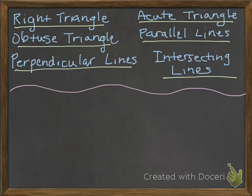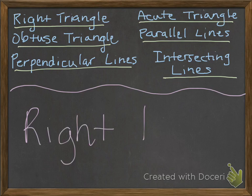First definition: a triangle with one 90-degree angle. If you said right triangle, you were right.